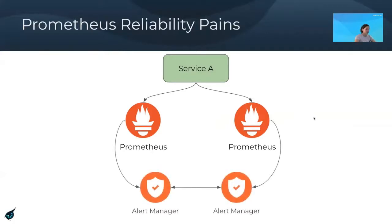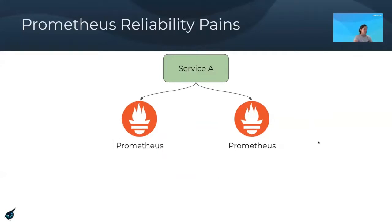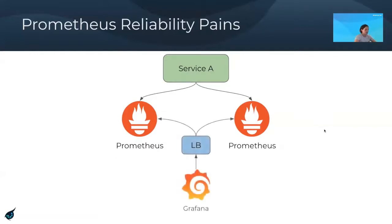When it comes to alerting, since the Alert Manager is also a single binary, you would need to run two instances as well, triggering alerts for their respective Prometheus instances. For viewing data from a dashboard, you would put a load balancer between your two Prometheus instances and point the Grafana instance to that load balancer, so all read requests get balanced between the two. This generally works well for reliability in the sense that you get at least one copy of your data.